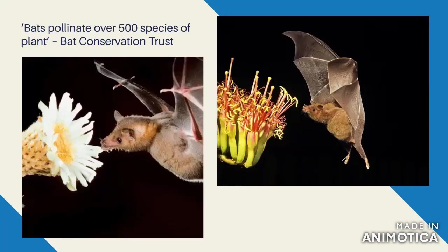Bats cover two key ecosystem services: pest control and pollination. Bats pollinate over 500 species of plant — usually tropical plants — including mangoes and bananas. So the next time you're buying bananas at the supermarket, those bananas may only be there because of bat pollination. A huge volume of small flying insects — 3,500 per night — imagine if bats just vanished tomorrow. The sheer number of insects we would have makes them really, really important for pest control.